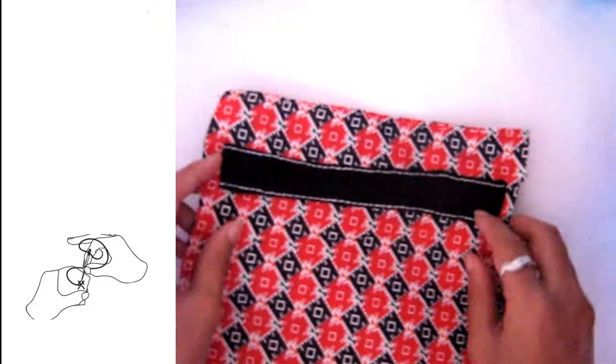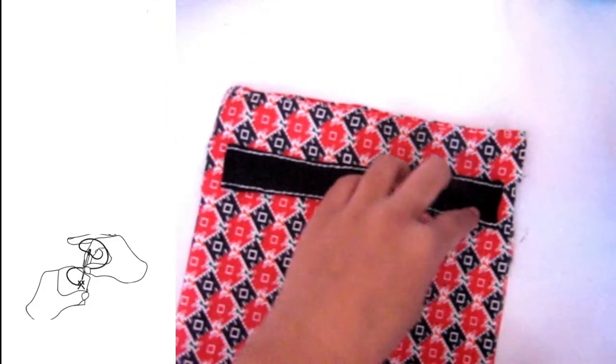Turn the fabric inside out and start stitching on both sides of the fabric that I've sewn.